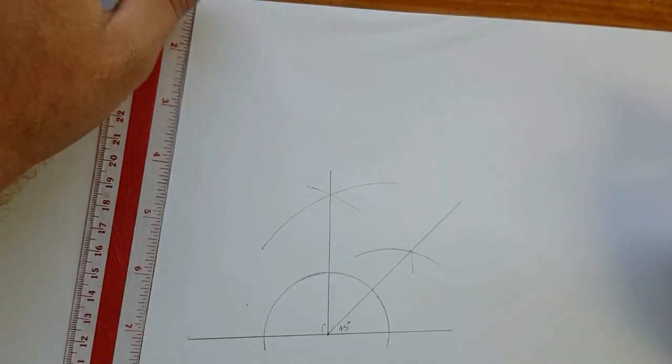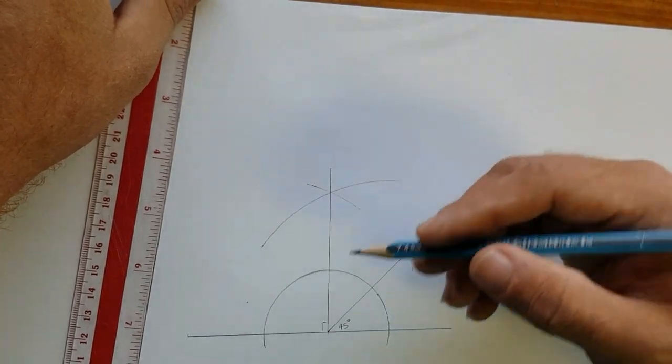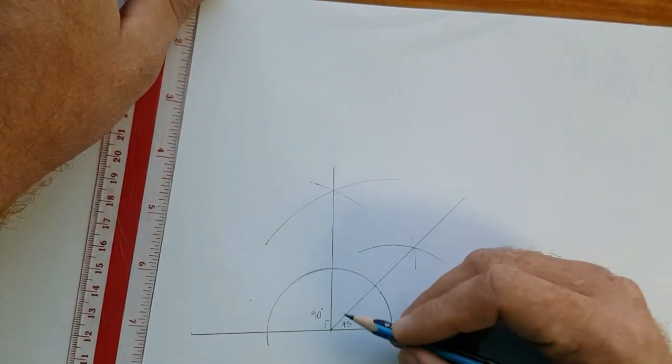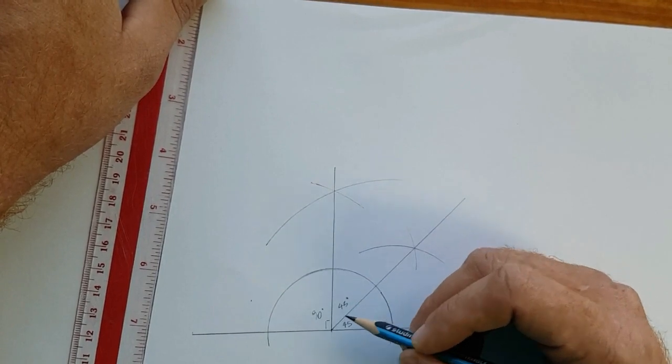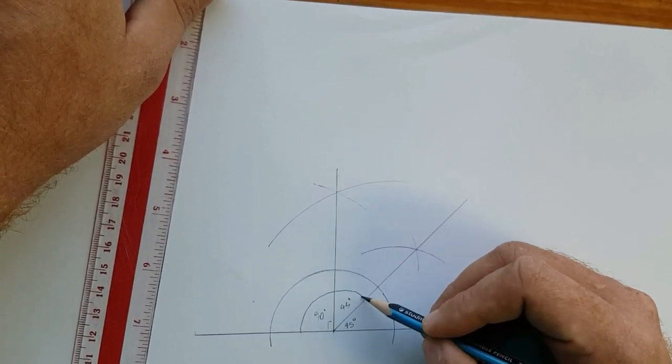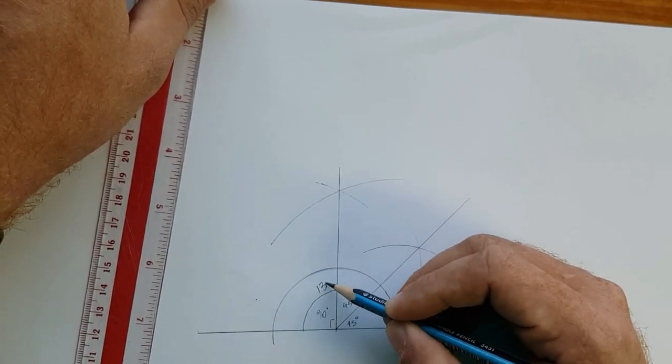To get our 135 degree, we add our 90 degrees plus 45 degrees. And that will give us 135 degrees.